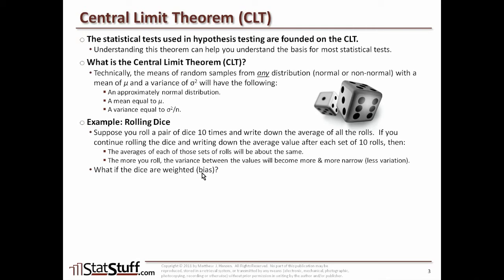But what if the dice are weighted — that is, what if there's some bias in them, and you're not getting a fair representation, or it's a non-normal distribution? You would actually come up with the same results, except that the average will be shifted. But even though the mean is shifted and different, you're still going to get a normal distribution with a mean equal to the overall mean, and a variance equal to the variance divided by the number of samples.